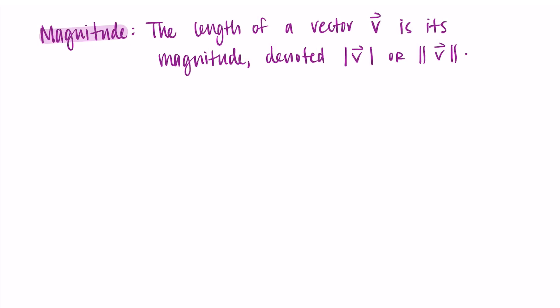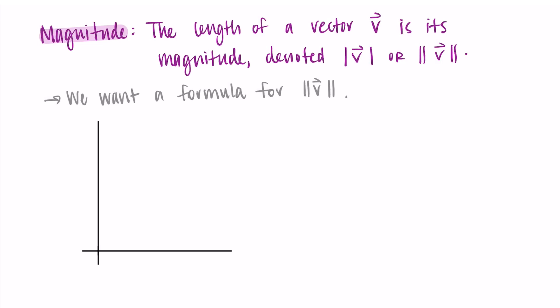Our goal is to find a formula for the magnitude of v so that if I give you a vector, you can tell me the magnitude using a formula. Let's draw some axes and talk about what this looks like in two dimensions. If I have an x and y axis, I could have a vector v which in standard position starts at the origin and ends at the point (x₁, y₁), so the vector is written as ⟨x₁, y₁⟩ for its components.